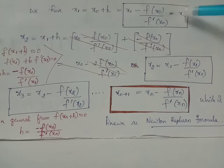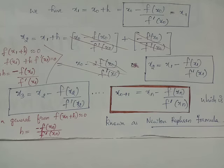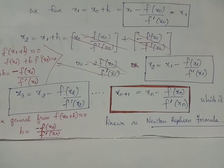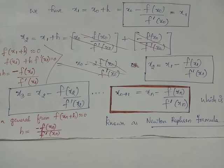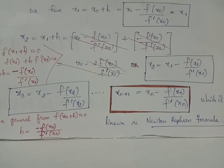By looking at these two expressions, we can predict that x3 = x2 - f(x2) / f'(x2). Proceeding like this, we get the general formula x_(n+1) = x_n - f(x_n) / f'(x_n). For any better approximation to the root alpha, expanding f(x_n + h) using Taylor series and neglecting higher powers of h gives h = -f(x_n) / f'(x_n), and hence x_(n+1) = x_n + h. This formula is known as the Newton-Raphson formula or Newton's formula.